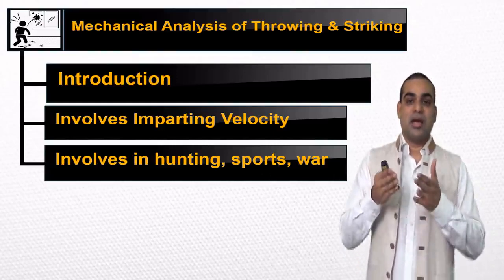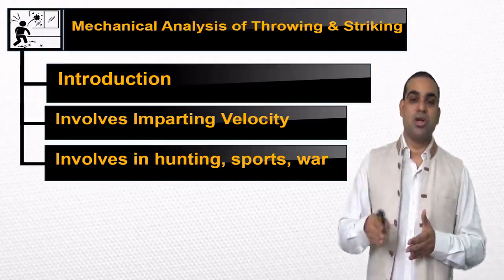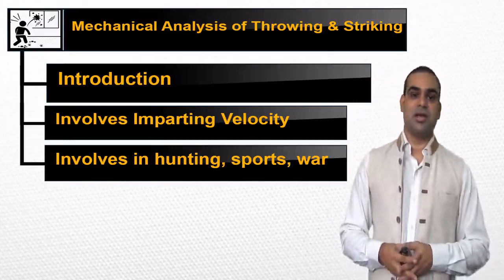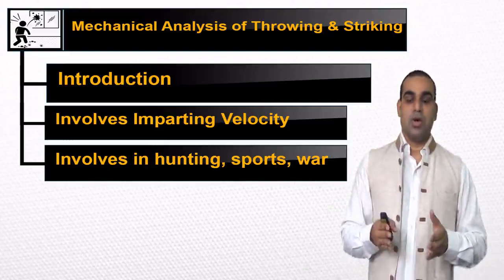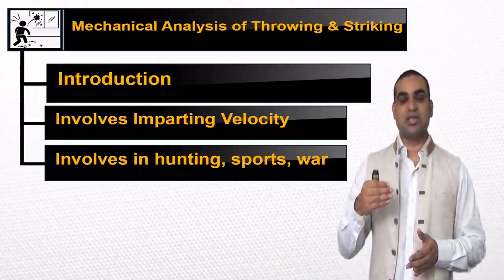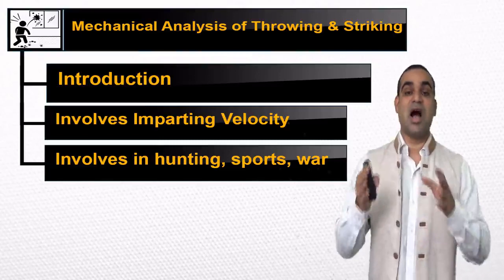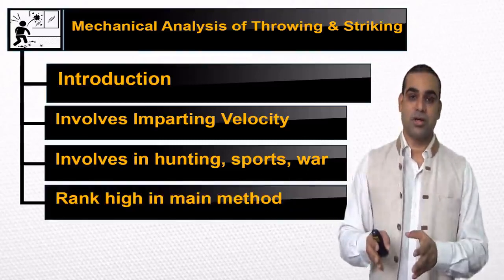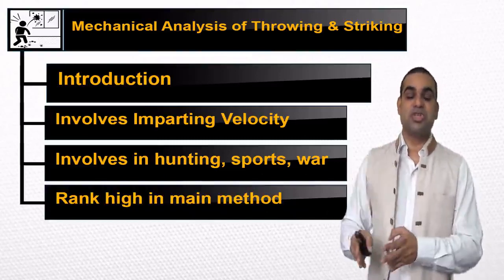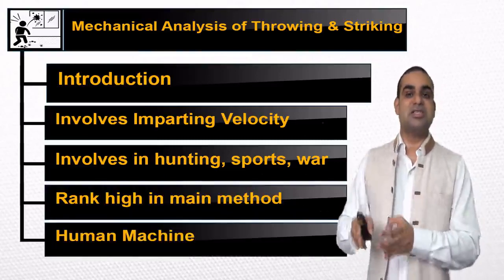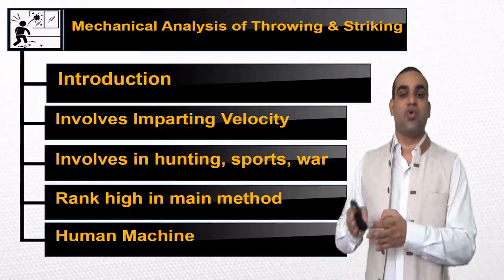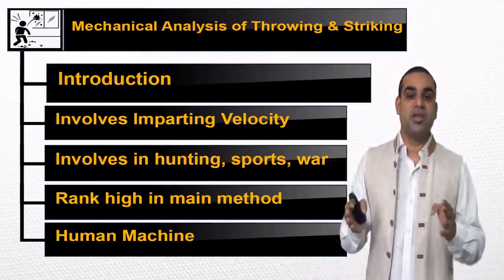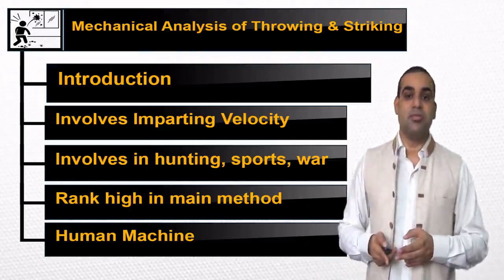Yeh gati vidya — throwing and striking — hum apne bhojan, yudh ke liye aur khel ke liye use mein lete rahe hain. Now throwing and striking we have ranked higher after the lifting and carrying of objects. Human machines have been good in these activities like throwing and striking, and are very much superior in accuracy and adaptability.